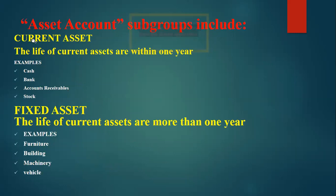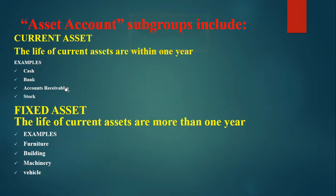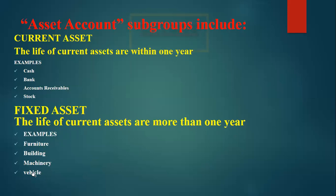Current assets have a life within one year — cash, bank balances, and receivables come and go. Fixed assets have a life of more than one year. Examples of fixed assets include building, furniture, machinery, and vehicles. We do not buy furniture or machinery every day; these remain with us for more than one year, hence they are fixed assets.